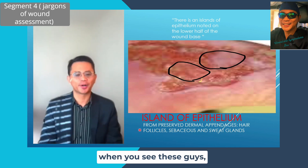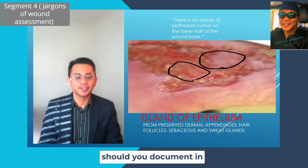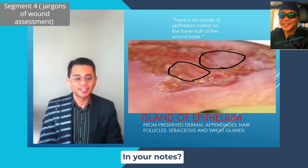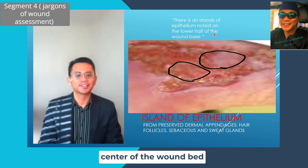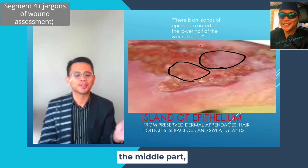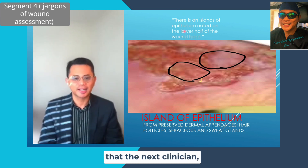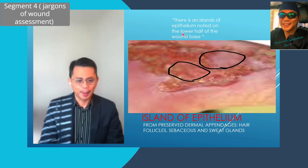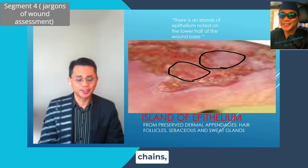When you see islands of epithelium, document them clearly in your notes — for example: 'There is an island of epithelium noted at the center of the wound bed,' specifying the location whether lateral, medial, or elsewhere. It is important to document this so that the next clinician is aware, and during dressing changes, these tissues are not harmed.